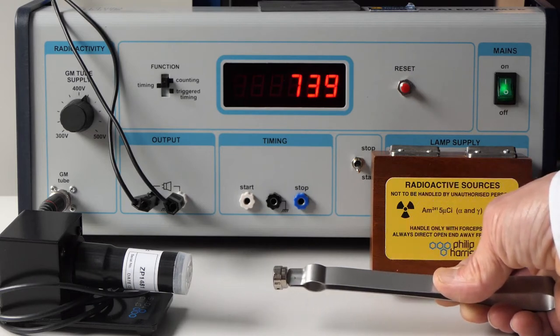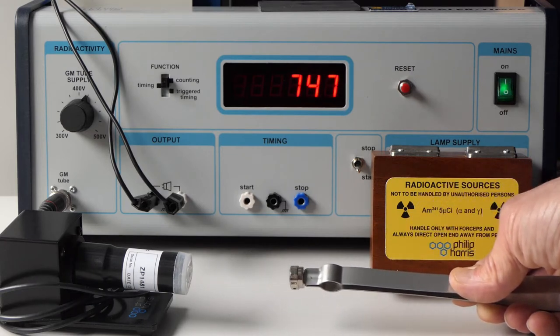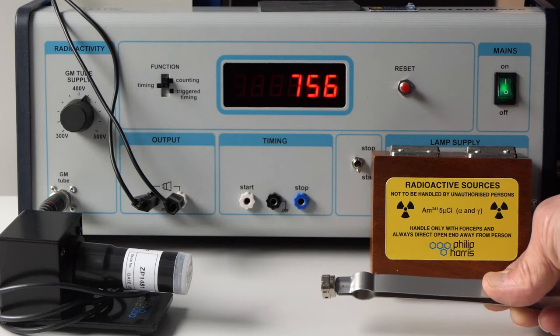The alpha particles are very ionizing but have only a very limited range in air.